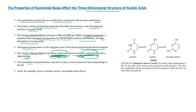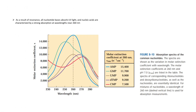Free pyrimidine and purine bases exist in two or more tautomeric forms depending on pH. For example, uracil exists in three tautomeric forms: lactam, lactim, and double-lactim. These are the tautomeric forms of nitrogenous bases.